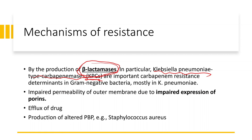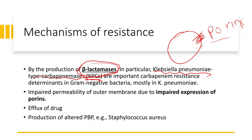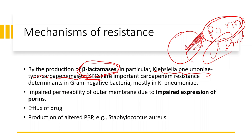Other mechanisms of resistance include: reduced porin expression — gram-negative bacteria have an outer lipopolysaccharide membrane with porin channels that allow molecules to enter; some bacteria become resistant by producing fewer porins, so drugs cannot enter. Another mechanism is efflux, where the drug enters the bacterial cell but is actively transported back out. Some bacteria also produce altered penicillin-binding proteins, i.e., altered transpeptidase.